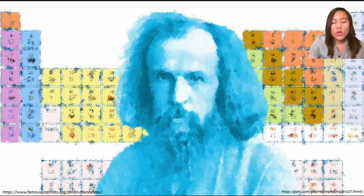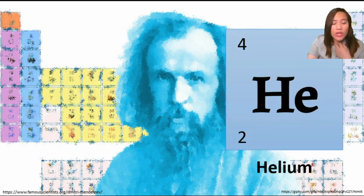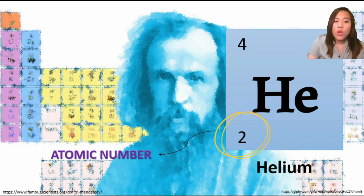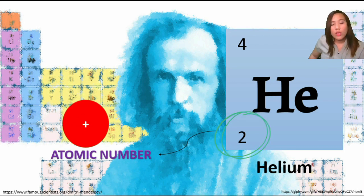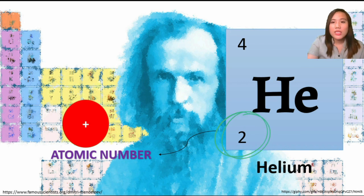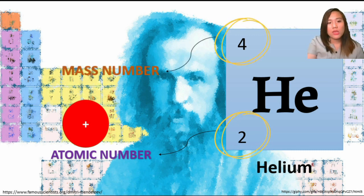In the periodic table, scientists assigned a number to each element based on its protons and atomic mass. I have here an example of helium. The number under the symbol is called atomic number, which represents or is equal to the number of protons. So when you're asked for the number of protons of a specific element, your answer is the atomic number because they are the same.